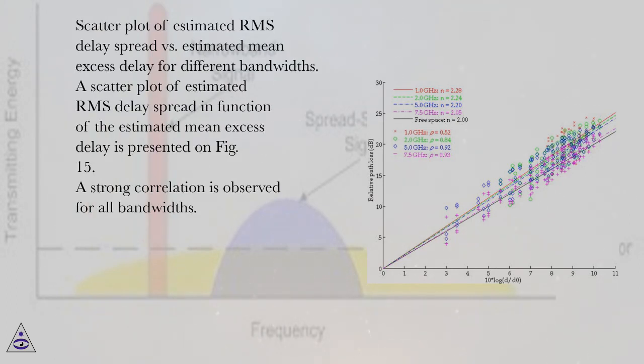Scatter plot of estimated RMS delay spread versus estimated mean excess delay for different bandwidths. A scatter plot of estimated RMS delay spread in function of the estimated mean excess delay is presented on Figure 15. A strong correlation is observed for all bandwidths.